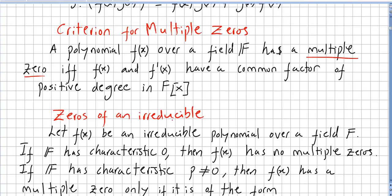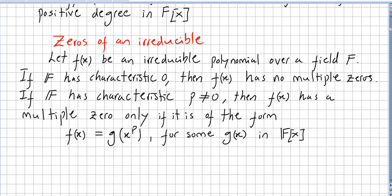Another concept is the concept of zeros of an irreducible. Let f(x) be an irreducible polynomial over a field F. If F has characteristic zero - if you don't know what this is, please check the previous videos - then f(x) has no multiple zeros.